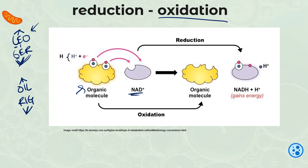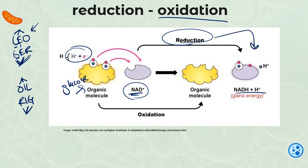NAD+, the nicotinamide adenine dinucleotide molecule, is going to grab onto some hydrogens and some electrons from an organic molecule — glucose is often that organic molecule. When NAD+ gains those electrons and protons from that organic molecule, it is reduced. It becomes NADH plus H+, which has more energy, so it is also a little bit of an energy carrier molecule. The organic molecule that lost those protons and electrons is oxidized. Oxidation is the loss of electrons and protons; reduction is the gain of electrons and protons.